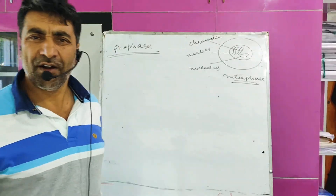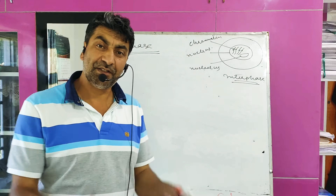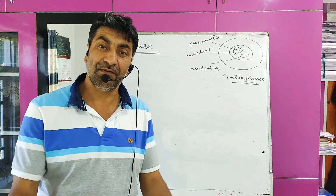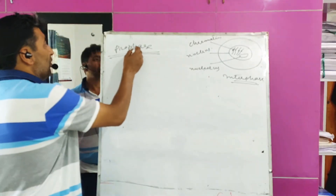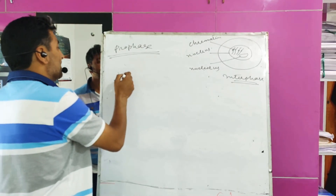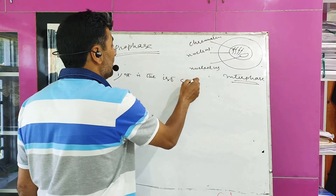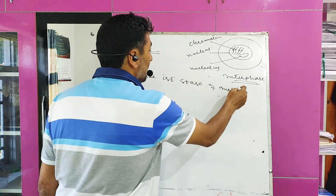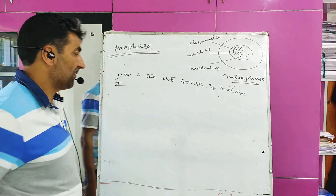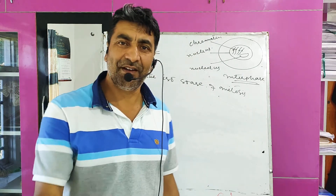This cell now undergoes cell division. Prophase is the first stage after S and G2 phase, or we can say it is the first phase of mitosis. What are the various changes which occur during prophase? First point: it is the first stage of mitosis. Number second: it follows S and G2 of interphase.